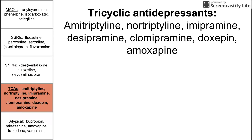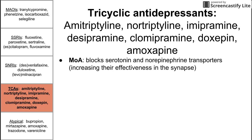Next are the tricyclic antidepressants. These are amitriptyline, nortriptyline, imipramine, desipramine, clomipramine, doxepin, and amoxapine. Their mechanism is that they block serotonin and norepinephrine transporters, increasing their effectiveness in the synapse — a similar mechanism to SNRIs, though SNRIs block reuptake while tricyclics block the transporters that would otherwise remove serotonin and norepinephrine from the synapse.